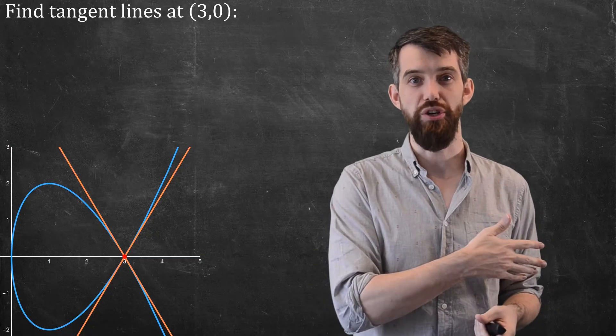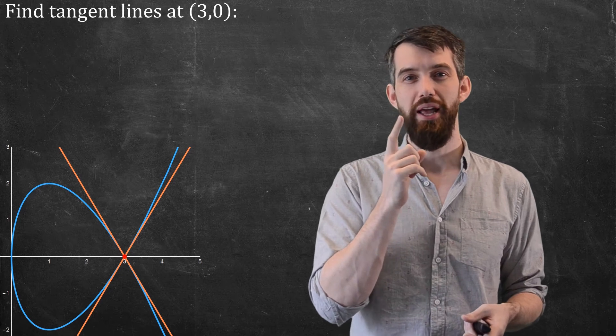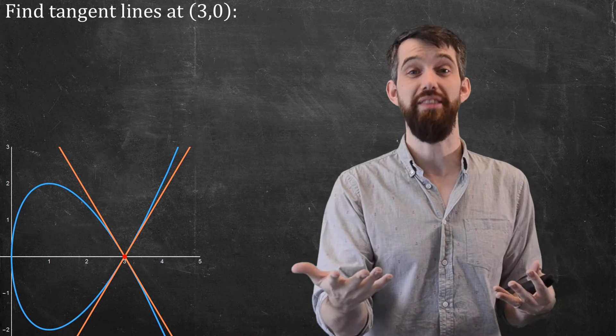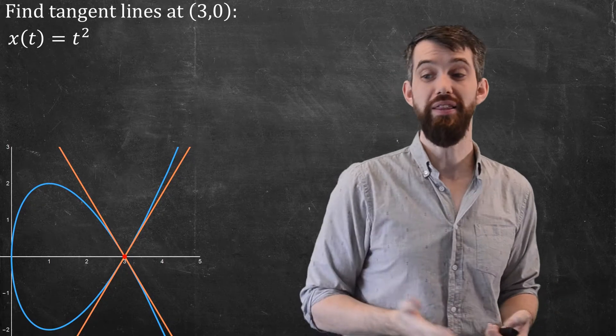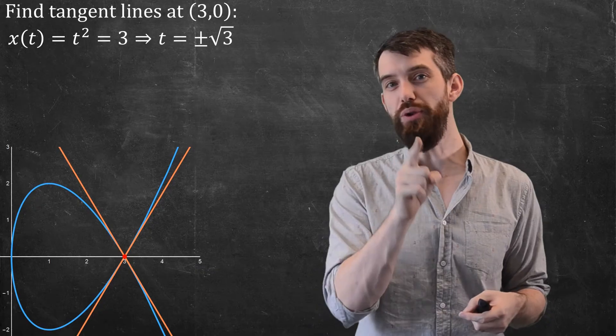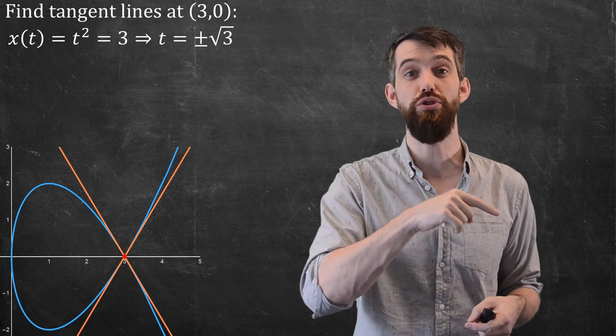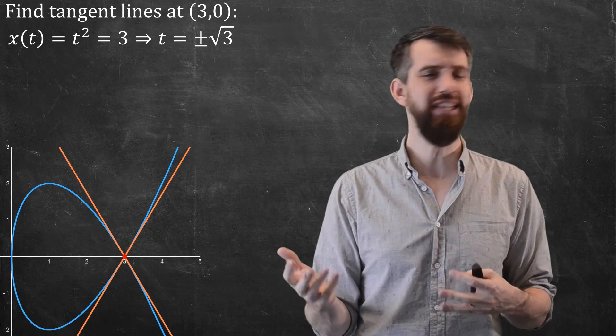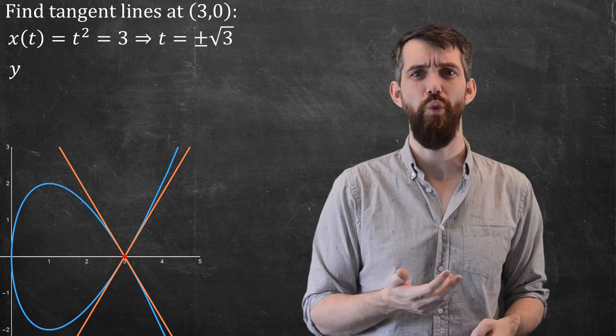Well, the first thing we need to do is figure out, well, hold on. If x is 3 and y is 0, what's the value of t at this point? We can actually just plug this into the formula. So x(t) is known to be t². If I set that equal to 3, that's going to tell me that t = ±√3. Now, this is actually enough, but let's just do a quick check and see if it worked out for y as well.